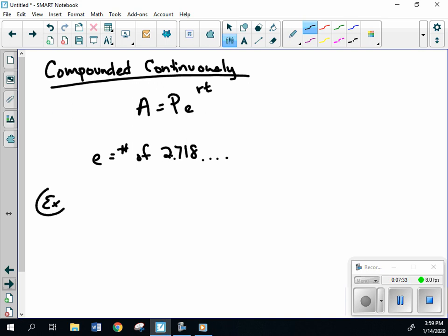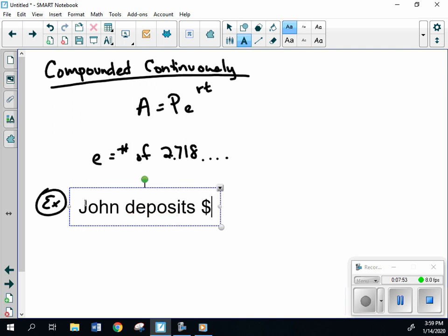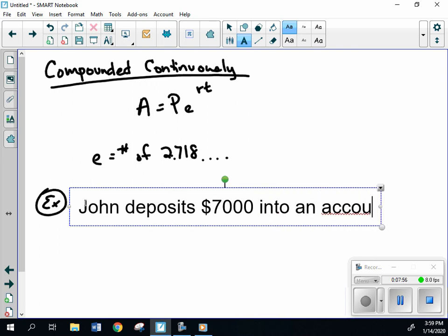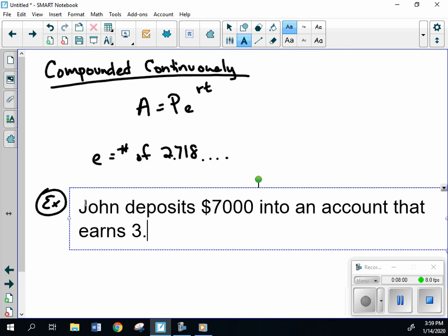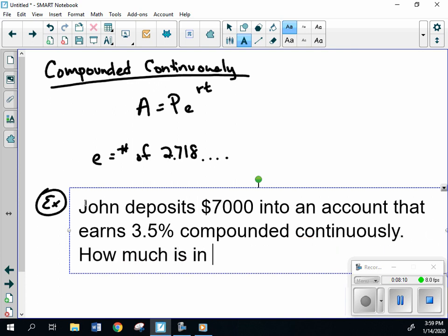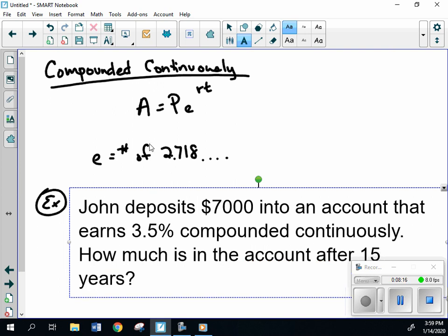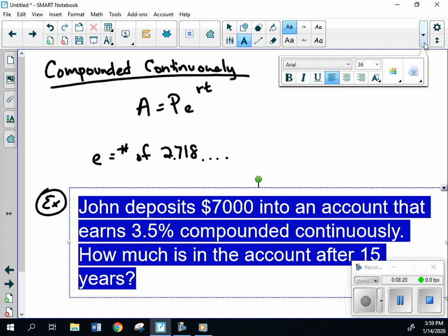So let's look at an example here. Again, I will type this one out to make it a little bit faster instead of me writing it out. So let's go with John deposits $7,000 into an account that earns 3.5% compounded continuously. How much is in the account after 15 years?